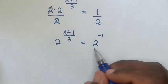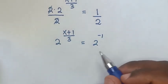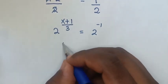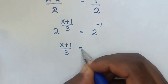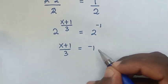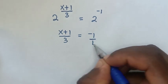Now here, because we have the same base of 2, we will compare the powers. So the powers are (x+1)/3 equals -1, which is the same as -1/1.